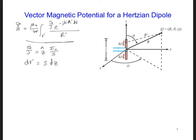In other words, the triple integral turns into a single integral along z, along its length. And that's because we're assuming the current is constant within the interior of the dipole.